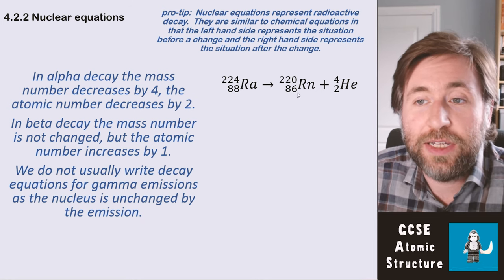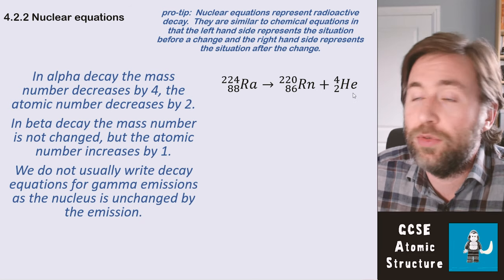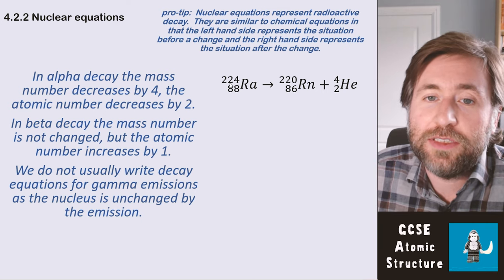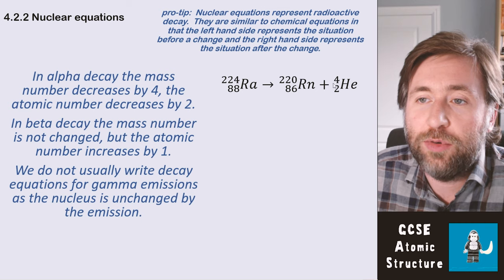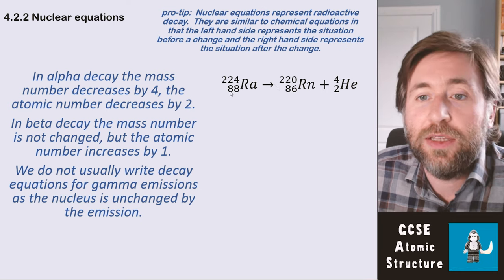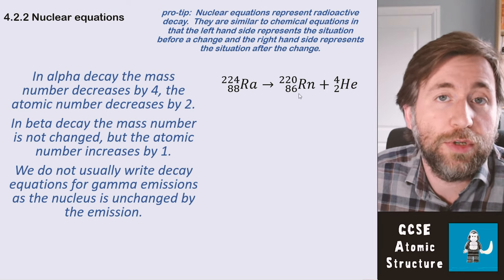So this is a decay equation that describes an alpha decay. We have radium here decaying into radon and giving out an alpha particle. You can use He for alpha particles or the symbol alpha—both are acceptable. Notice that the mass number has decreased by four because four protons and neutrons of mass have left the nucleus. The atomic number has only decreased by two because only two protons have left that nucleus.